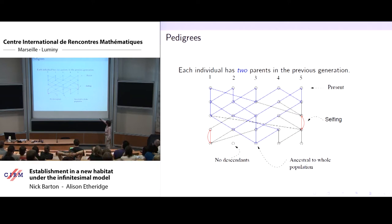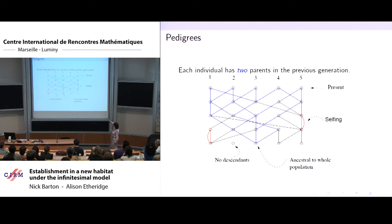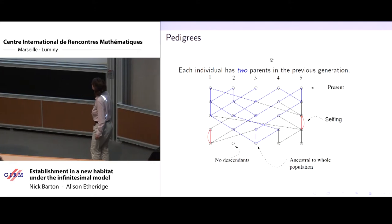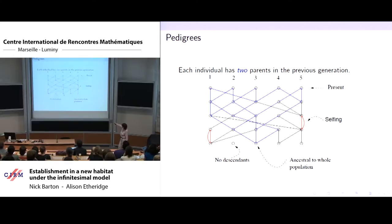If you look carefully, I've identified all the descendants of this individual in the ancestral population — and some individuals have no descendants. We also allow selfing, so a parent can be picked twice by one individual. There are multiple different routes through the pedigree that join a descendant from an ancestor, and that's important for the models that follow.